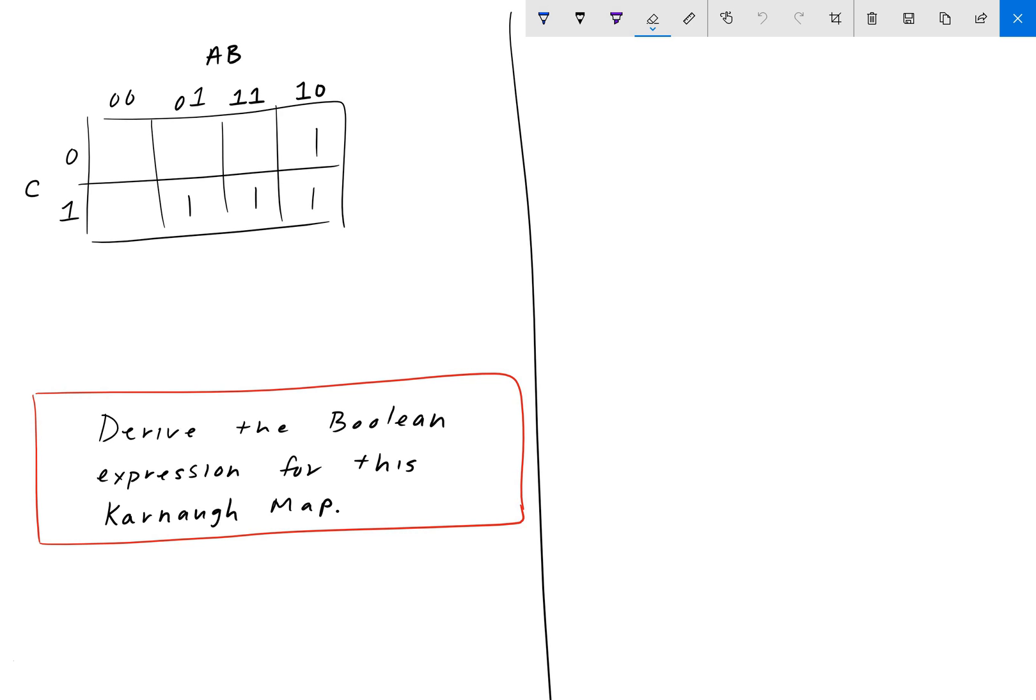Here, for this specific K-map, we can choose different groupings. For instance, we have this group here, which is a group of 2, and we have another group of 2 here. So we wouldn't be able to group these bottom 3 here, right, because that would be a group of 3, it's not a power of 2.